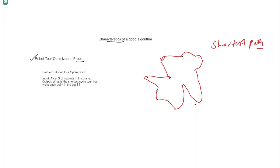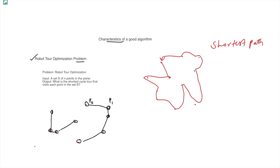One approach to this shortest path robot optimization is the nearest neighbor algorithm. First, select any point as P0. Then find the closest unvisited point to P0 — that becomes P1. From P1, find its closest unvisited point — that becomes P2. Continue in this way, visiting P3, P4, and so on, until all points are covered, then return to P0.